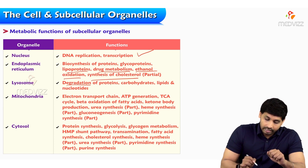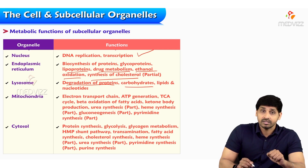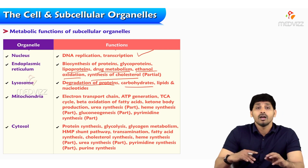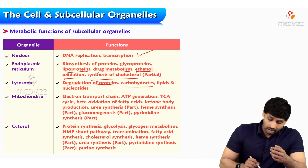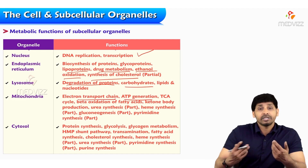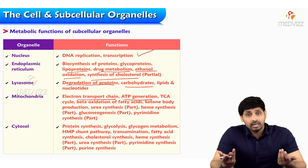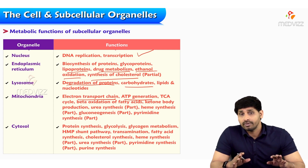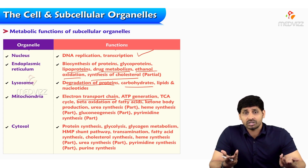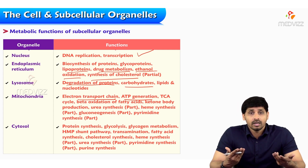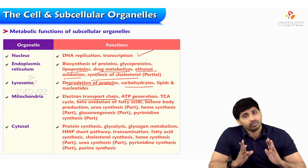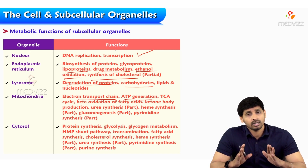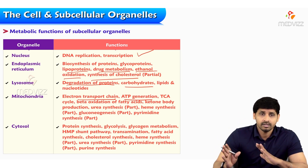Lysosomes handle degradation of proteins, carbohydrates, lipids, and nucleotides. Mitochondria are responsible for the electron transport chain, ATP generation, TCA cycle, beta oxidation of fatty acids, ketone bodies production, and urea synthesis — though only part of those reactions take place in mitochondria. Heme synthesis also has a few reactions in mitochondria, with other reactions taking place in the cytosol. Gluconeogenesis is the same: a few reactions take place in mitochondria and a few outside, and pyrimidine synthesis is similar.